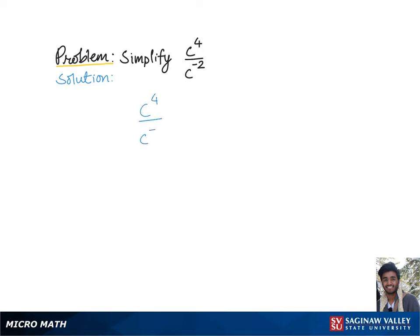To simplify c to the 4th over c to the negative 2, let's review the quotient rule, which states that to divide exponents with a common base, we keep the common base and subtract the exponent in the denominator from the exponent in the numerator.